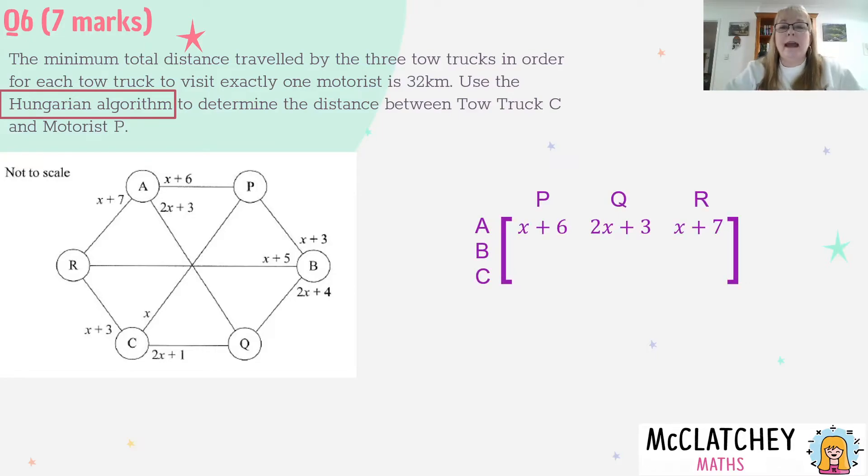We're going to have the motorists on one section and the tow trucks on another section because we're creating an allocation between the two. So I've started with row A, where A, B and C represent our tow trucks and these are our motorists P, Q and R across the top. Between A and P I've got X plus 6, between A and Q I've got 2X plus 3, between A and R I've got X plus 7. I'm going to follow the same principle reading off my network to fill out the second row and the third row.